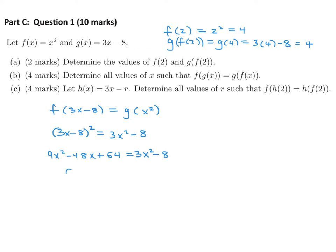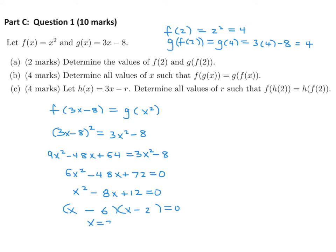So that is 6x squared minus 48x plus 72. Divide through by 6 and you get x squared minus 8x plus 12. This factors nicely as (x minus 6)(x minus 2), so therefore x equals 2 or x equals 6.